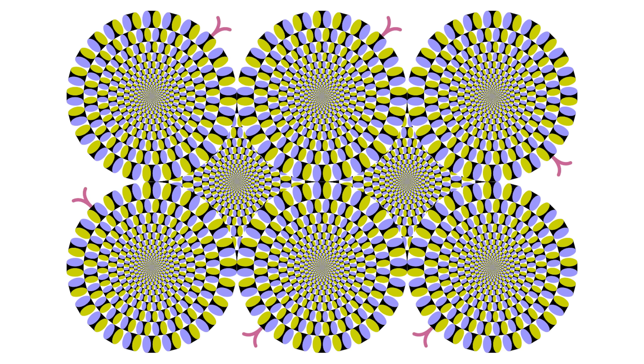Rotating Snakes. These circles are stationary, but they appear to be moving. Contrast and small involuntary eye movements seem to play a huge role in this illusion.